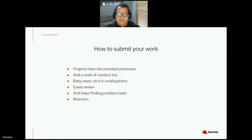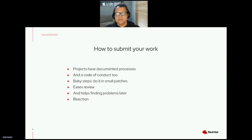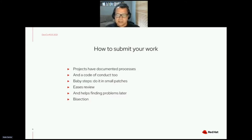Small patches are easiest to review by maintainers and other developers — you just look at the patch, it's small, and you can approve it and move to the next one. It also helps with finding problems later using a process called bisection, where you use tools to do a binary search: you know the first version works and now it doesn't, so you go to the middle in terms of change sets and try there, working through until you pinpoint which change introduced the problem.